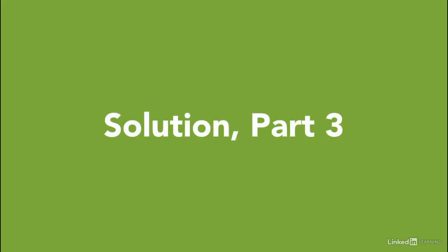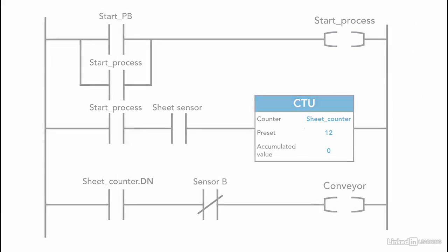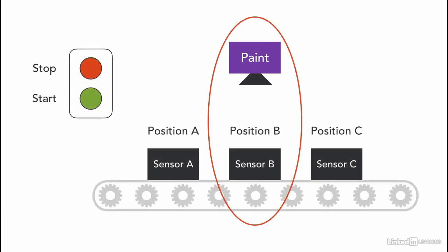This is how the program looks so far. Let's continue programming. Once the sheet reaches position B, the conveyor stops and the paint is activated, turns on, and stays on for 10 seconds.